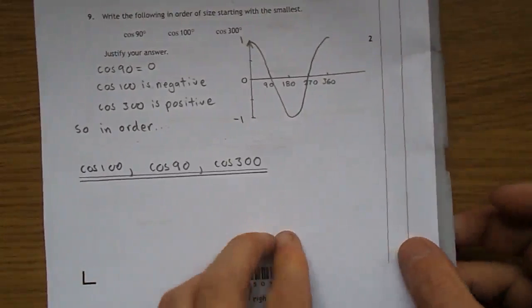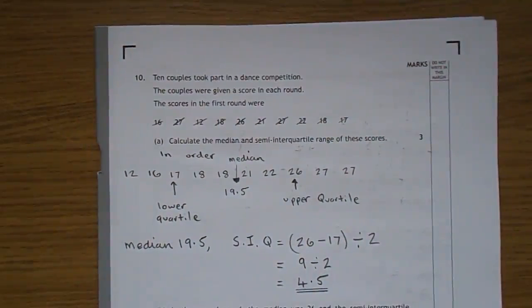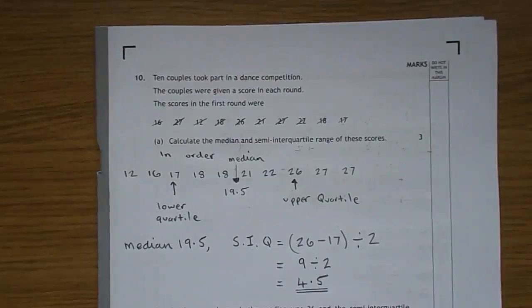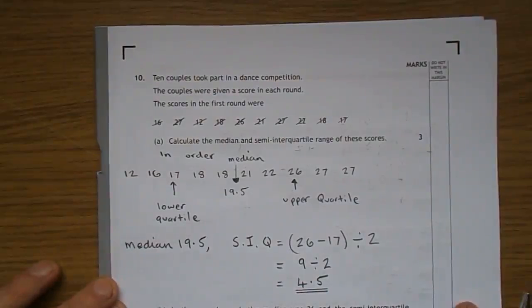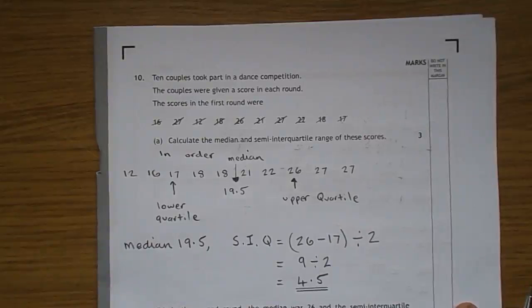Let's move on to question 10. 10 couples took part in a dance competition. The couples are given a score for each round. The scores in the first round were 16, 27, 12, 18, 26, 21, 27, 22, 18, and 17. Part A: calculate the median and semi-interquartile range for these scores.